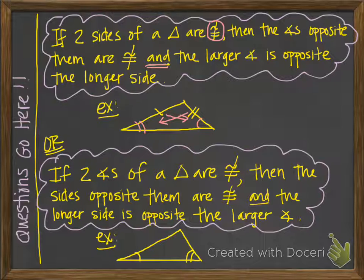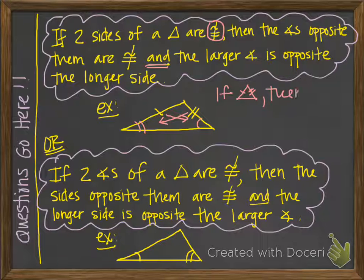The shortcut to writing this in a proof uses symbols: if two sides are not congruent, then the two opposite angles are not congruent.